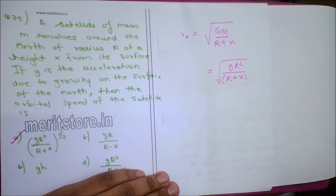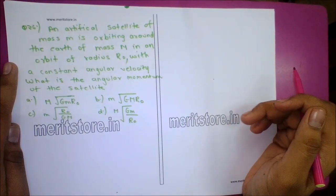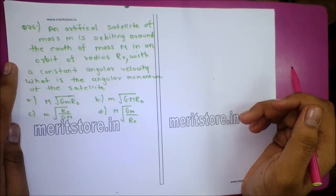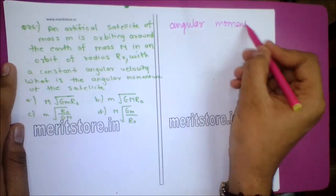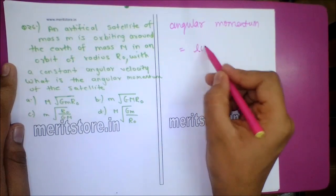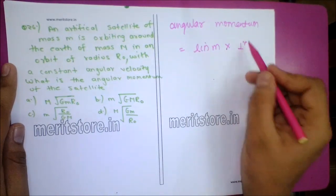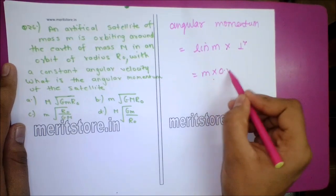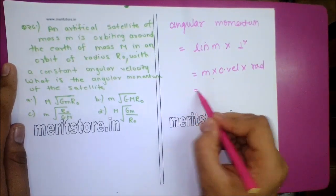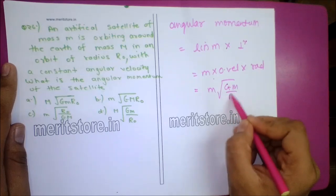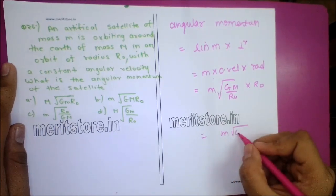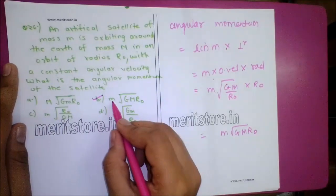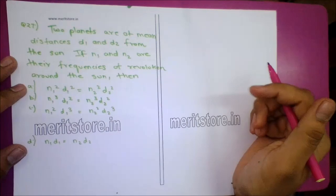Question 26: An artificial satellite of mass m is orbiting the Earth of mass M in an orbit of radius R0 with constant angular velocity. The angular momentum = linear momentum × perpendicular distance = m × V_orbital × R0 = m × √(GM/R0) × R0 = m√(GMR0). Option B, m√(GMR0), is the correct answer.